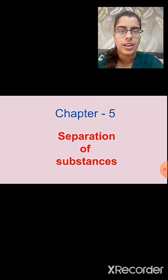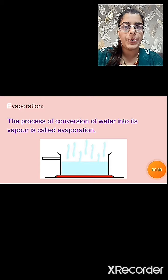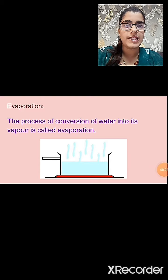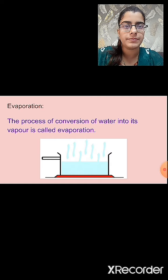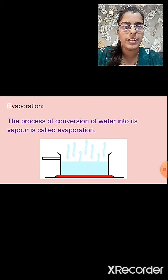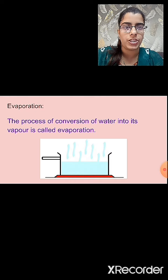In today's session we will revise the remaining chapter. We will study another method for the separation of substances, i.e., the evaporation method. Evaporation is the process of conversion of water into its vapour. When water is converted into its vapour form, this process is known as evaporation.